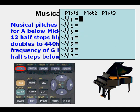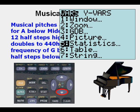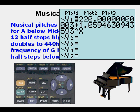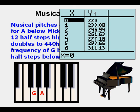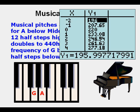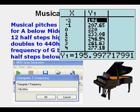We paste the function into Y= by going to Vars, 5, Statistics, arrow twice to the right to EQ, and press Enter. Evaluating using 2nd Graph to open table view, we scroll down to X = negative 2, representing 2 half steps below A below middle C. The output frequency is 196 hertz. Using a tone generator, inputting 196 hertz produces the sound of G below middle C.